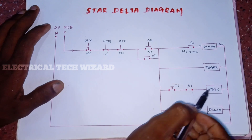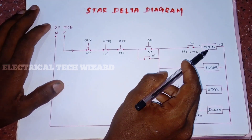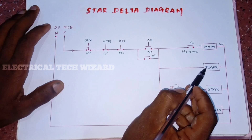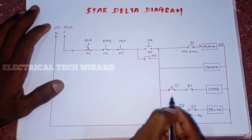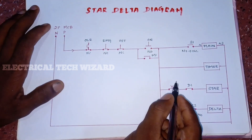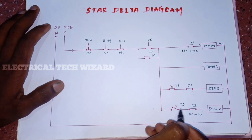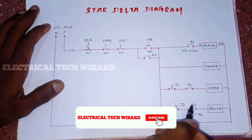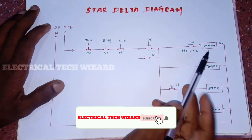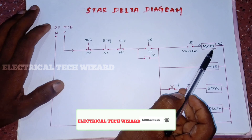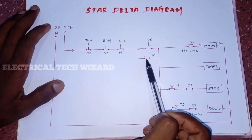In this video, we will explain the diagram with the timer. When we are on the star controller, we will set the timer to the star controller.